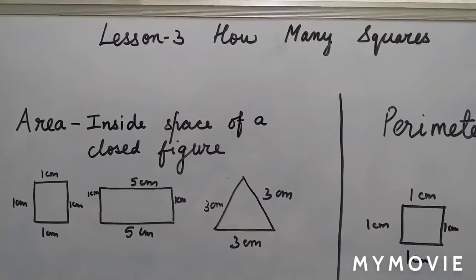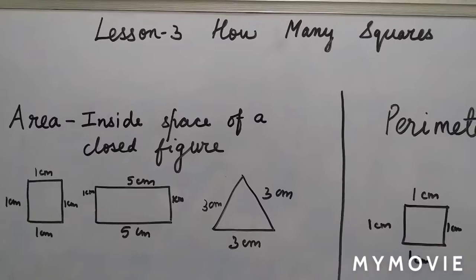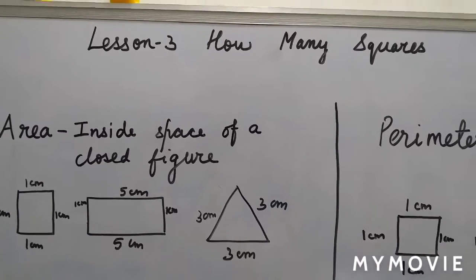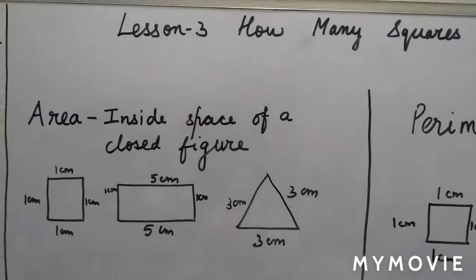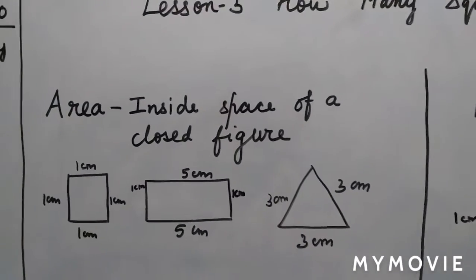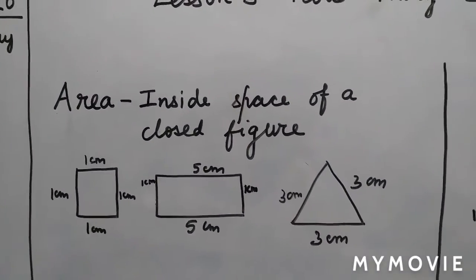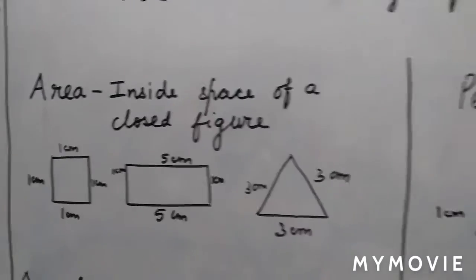Hello children, today we will be doing lesson number 3 of Mathemagic class 5: How Many Squares. So we are beginning this chapter and let me give you an introduction of what is area and the difference between area and perimeter.